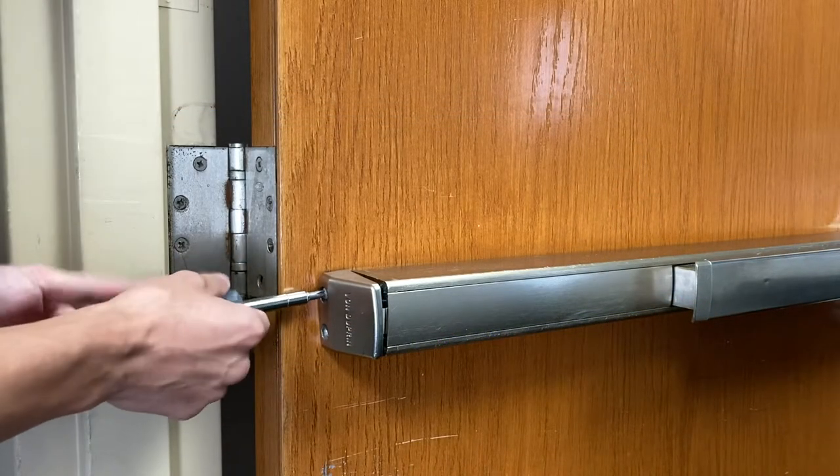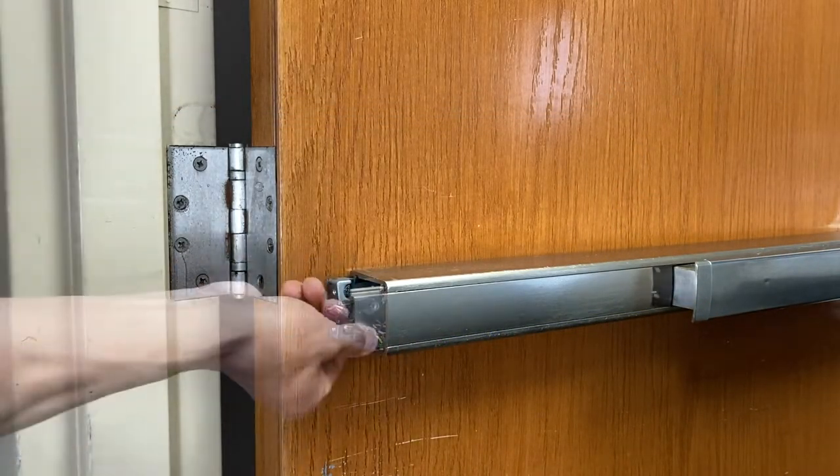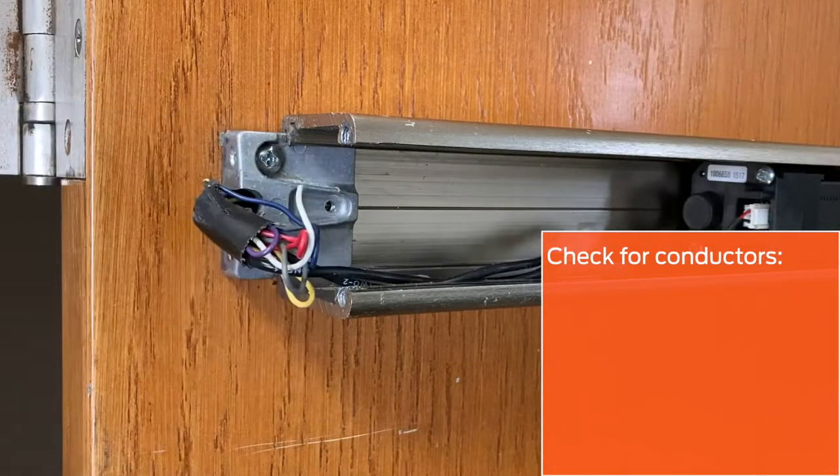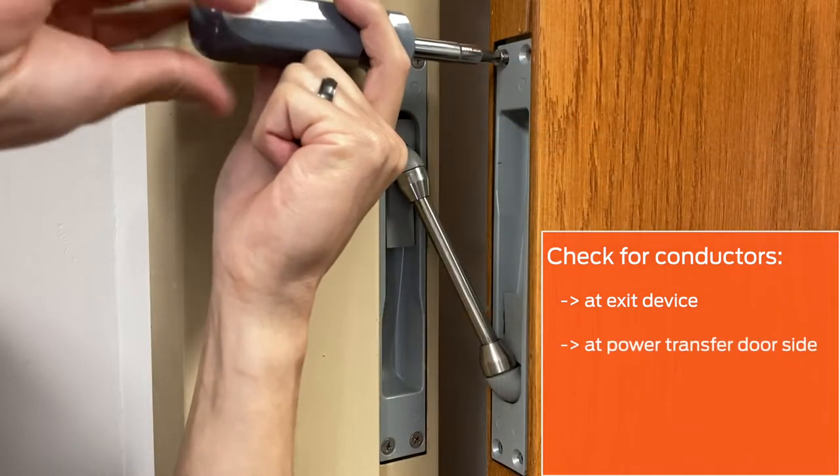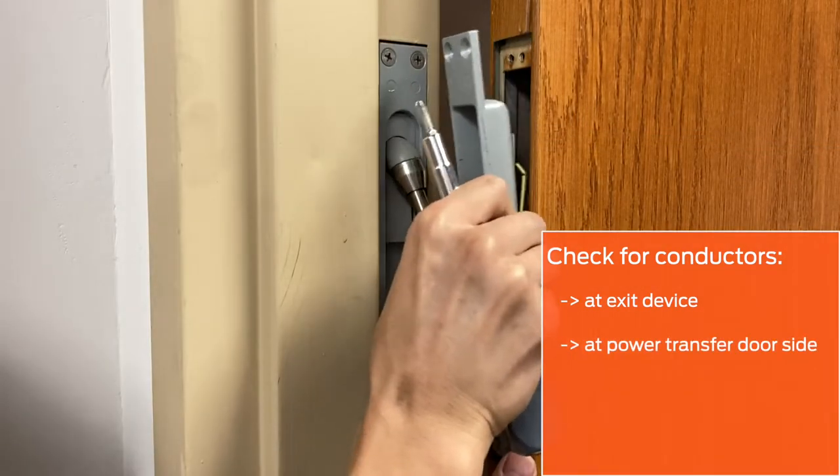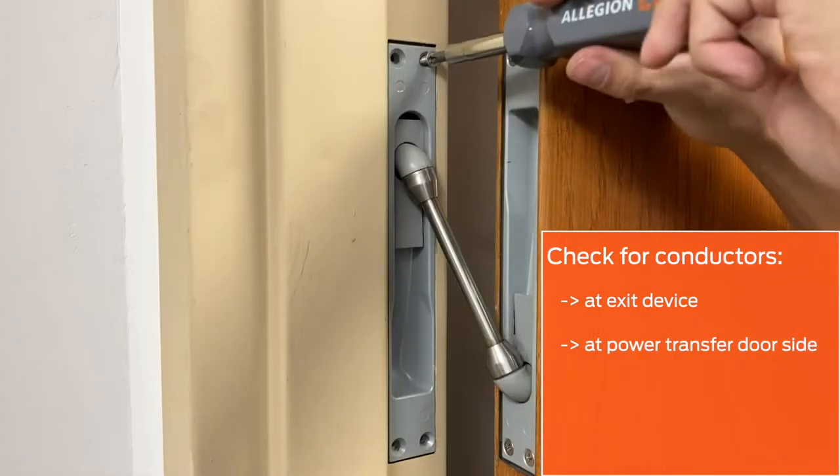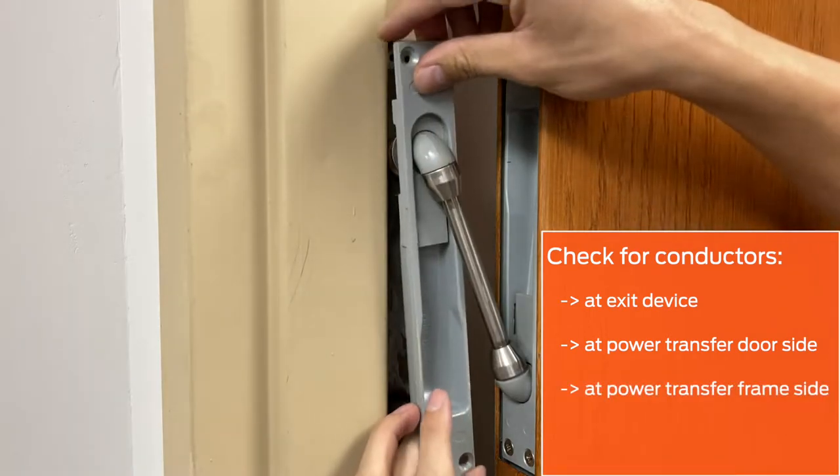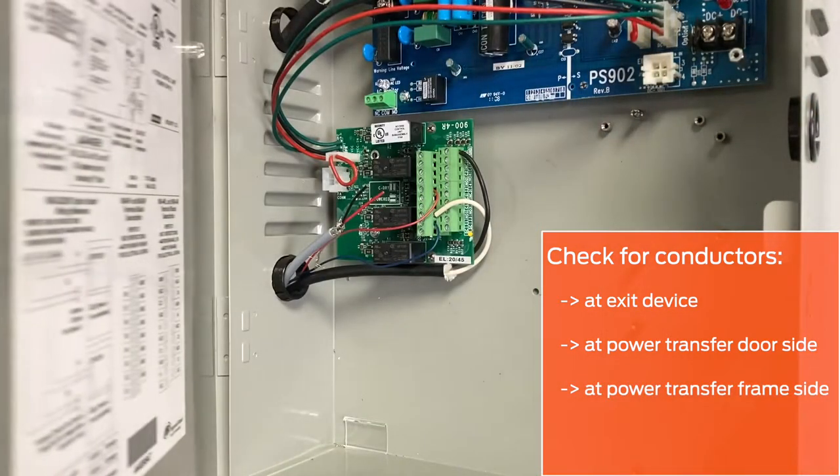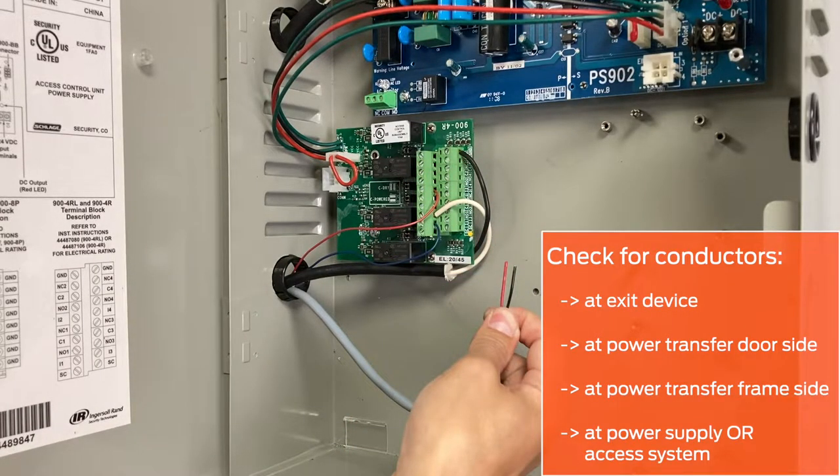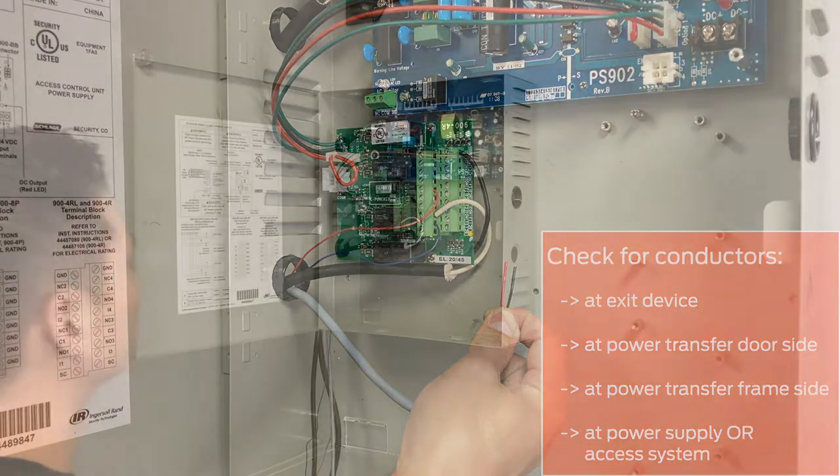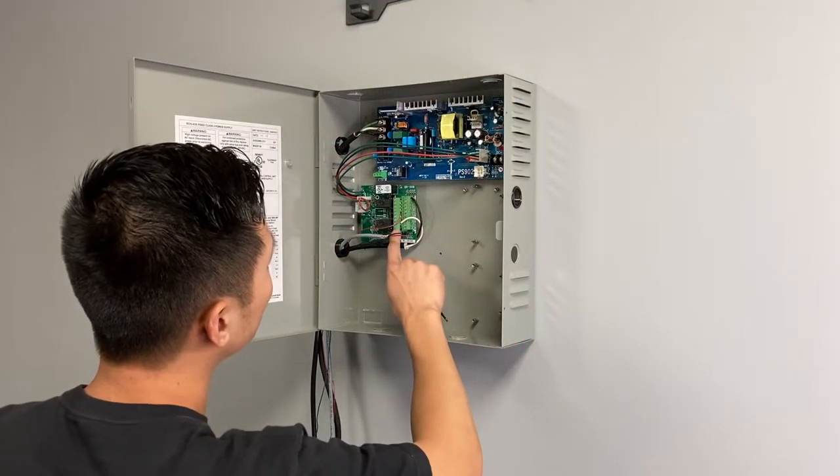Additionally, ensure that conductors are available to connect the ESL to your access system. Specifically, two available conductors at the exit device coming from the power transfer, two available conductors on the door side of the power transfer, two available conductors on the frame side of the power transfer, and two available conductors at the power supply or access system hardware.